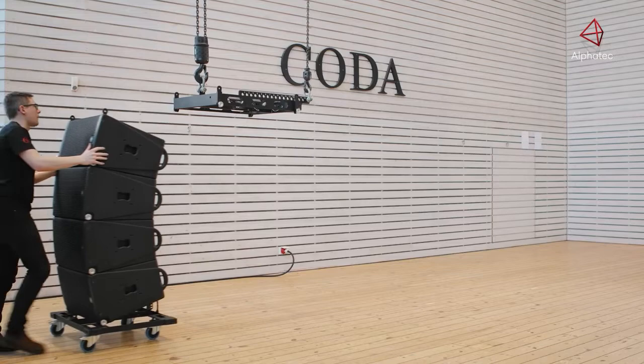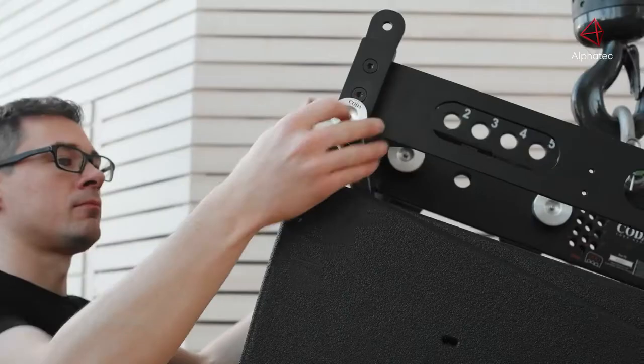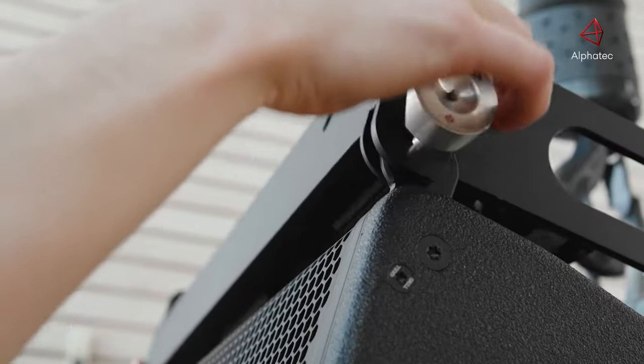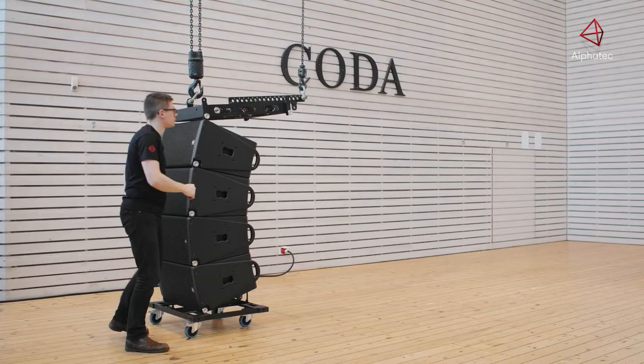Fly the FR-AR set in the required configuration. Push the dolly into position just in front of the frame. Open the pins, lower and lock into place.